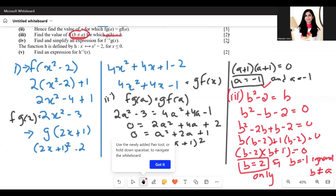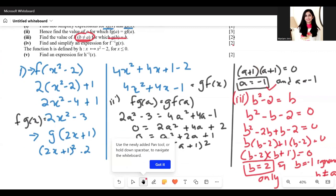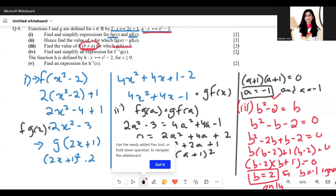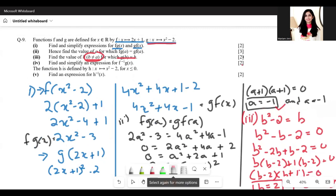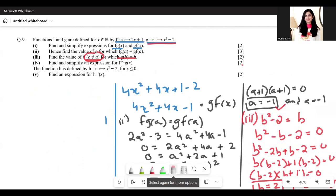Next up is find and simplify the expression for f inverse of g(x). Let's do part 4 here.